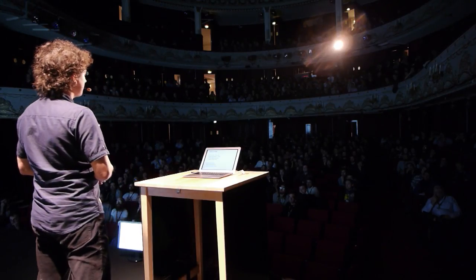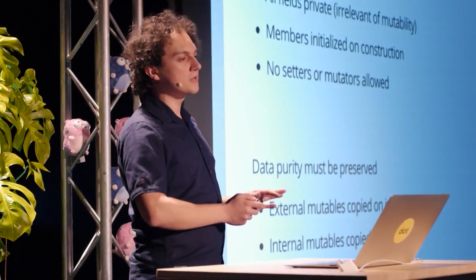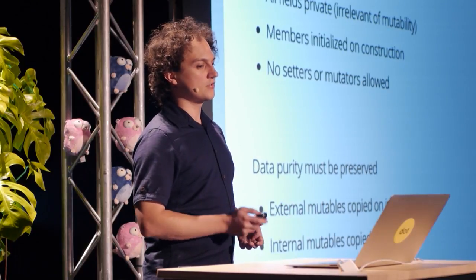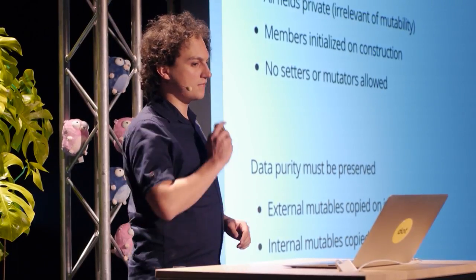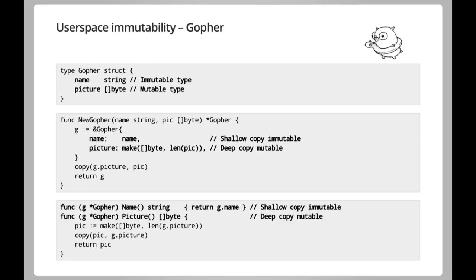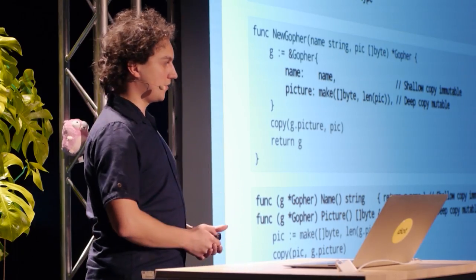Two things that may not seem obvious: if I'm doing immutable types and need to retain data purity, if I'm passing anything even remotely mutable into my immutable object during construction, I need to copy it to ensure it remains immutable. And vice versa — when getting something out from the immutable object, I need to make sure nobody from the outside gets to modify it. For example, to create an immutable gopher, all fields are private: name and picture. In the constructor, the name field can be simply assigned since strings are immutable, but the picture — a byte slice — requires a deep copy. Getters are fine as long as they return copies.